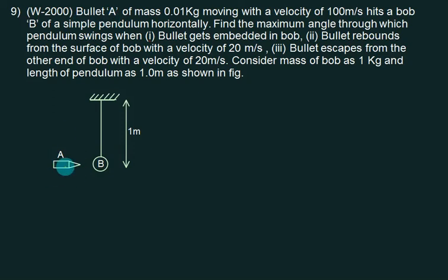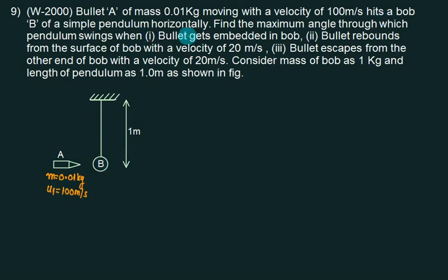We have a bullet of mass equals to 0.01 kg moving with a velocity u1 equal to 100 meters per second. It hits the bob of a simple pendulum. The bob is initially stationary, velocity equals zero. Find the maximum angle through which the pendulum will swing.